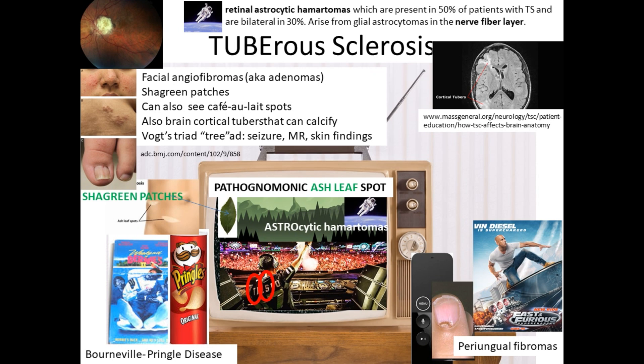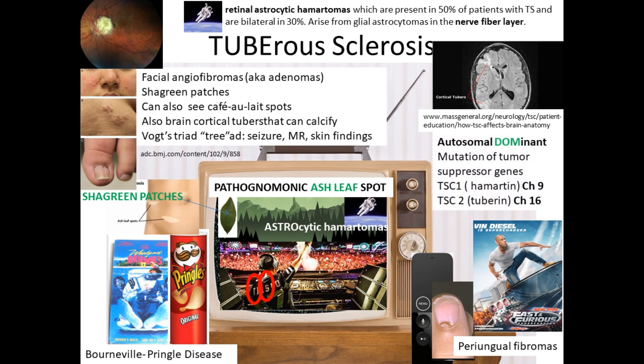Ninety percent of patients have brain cortical tubers, which can calcify. These cortical tubers can lead to seizures and have been linked with mental retardation, classifying Vogt's triad of seizures, mental retardation, and skin findings. Lower yield: TS can also have cardiac rhabdomyomas and renal angiomyolipomas. TS is autosomal dominant with mutations of tumor suppressor genes: TSC1 hamartin on chromosome 9 and TSC2 tuberin on chromosome 16.